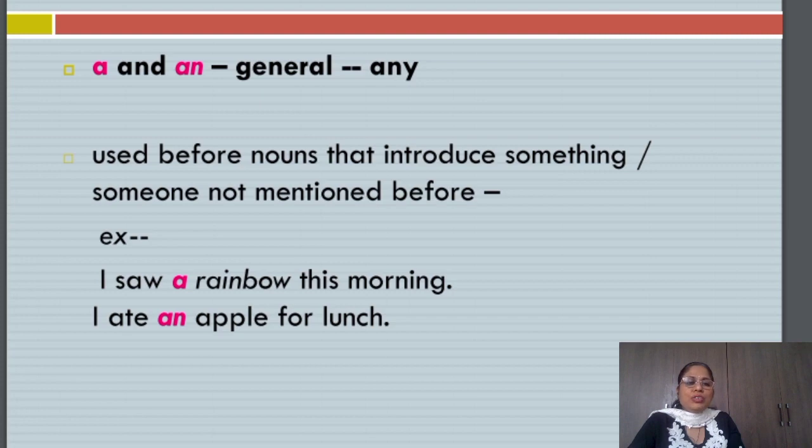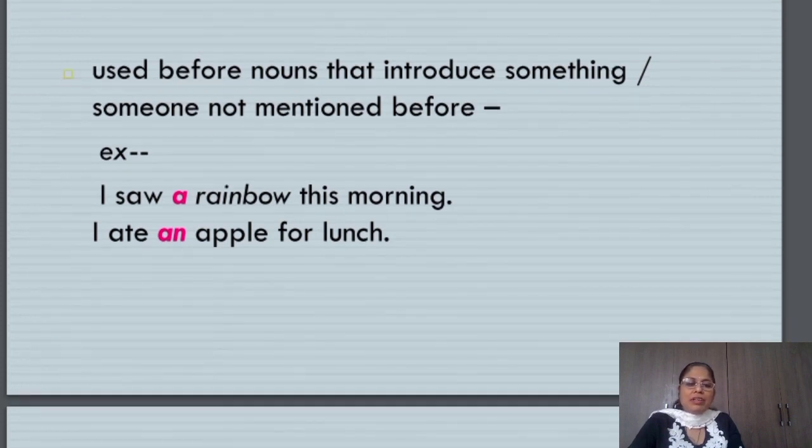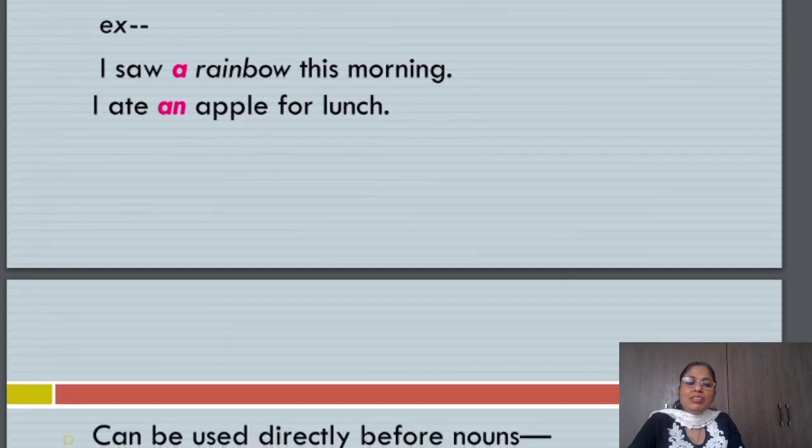A and an are used before nouns that introduce something or someone that have not been mentioned before. For example, I saw a rainbow this morning. I ate an apple for lunch. It means any apple. It means a rainbow in general.